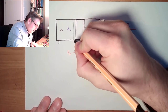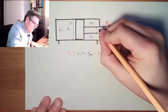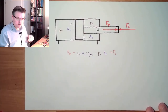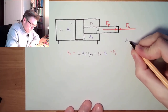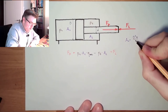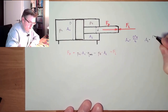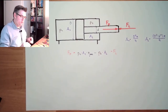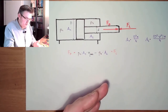The piston diameter is called D (capital letter) and the rod diameter is called d (small letter). Our area A1 equals D²·π/4, and our area A2 equals (D² minus d²)·π/4. Those are the two areas.